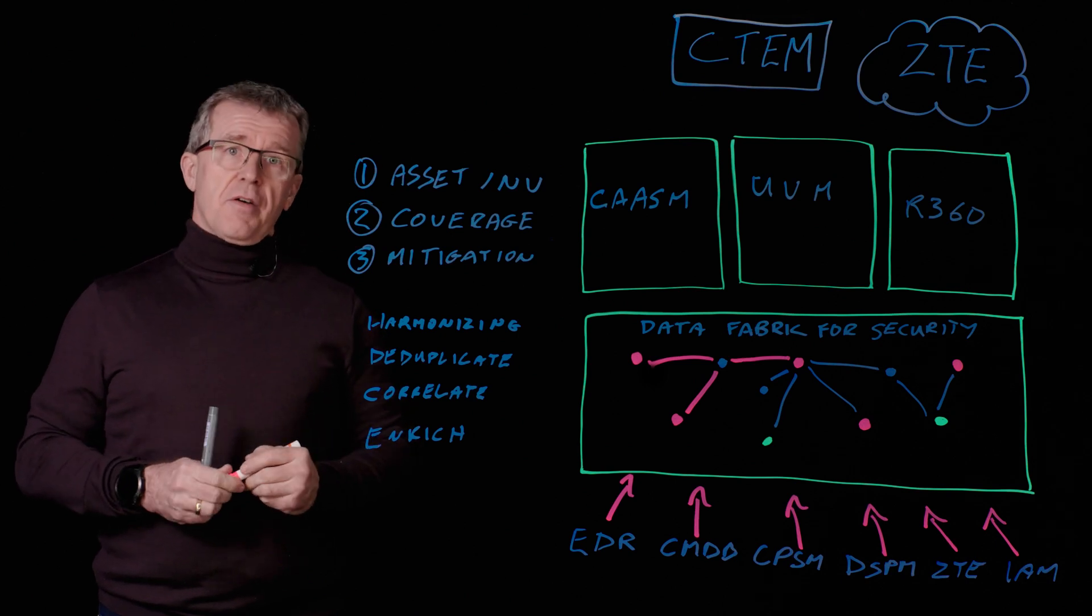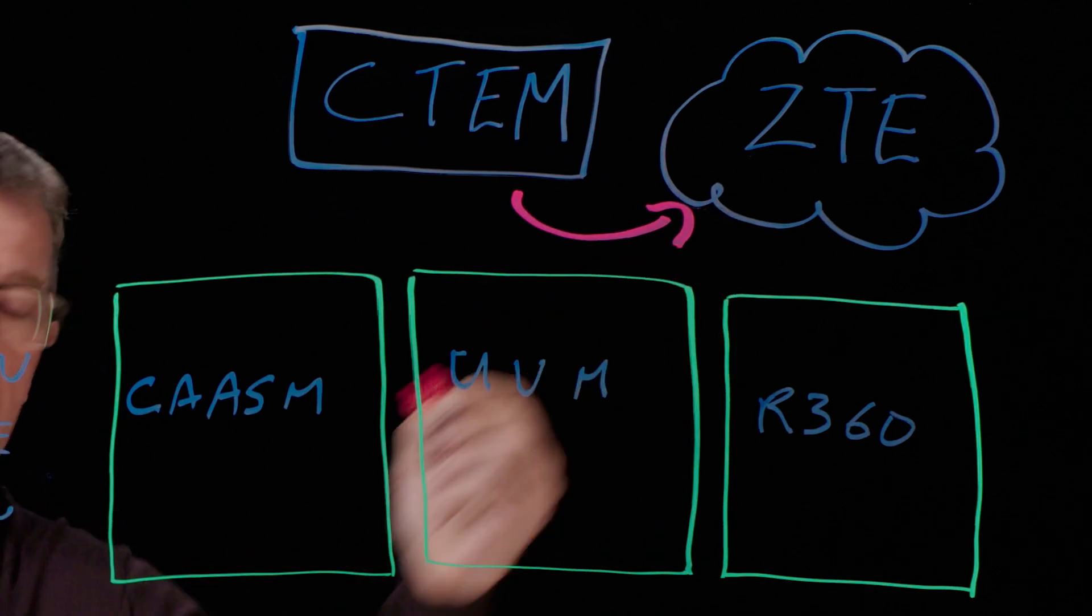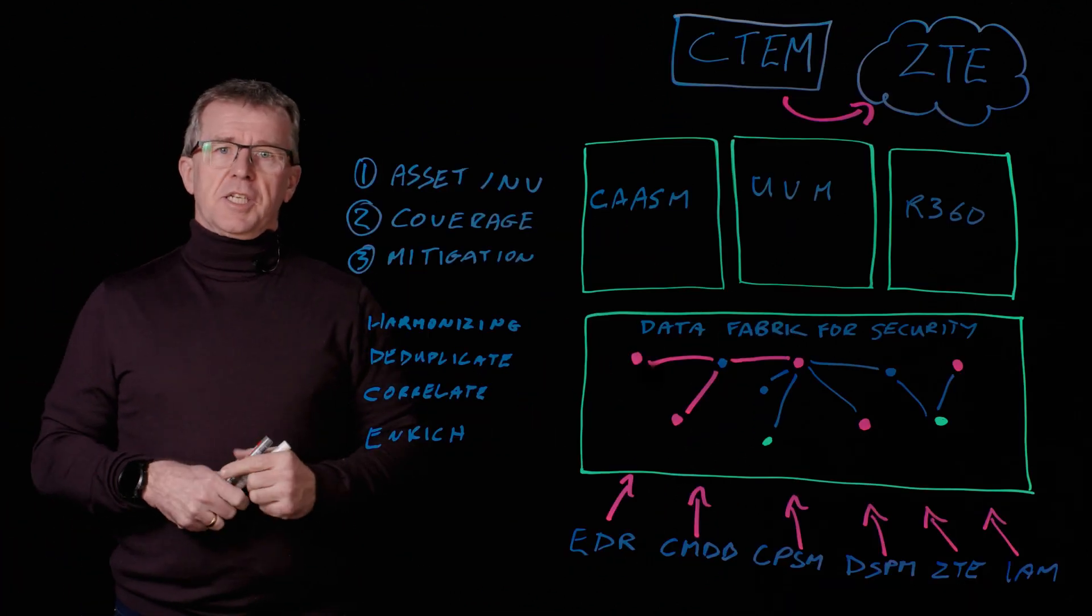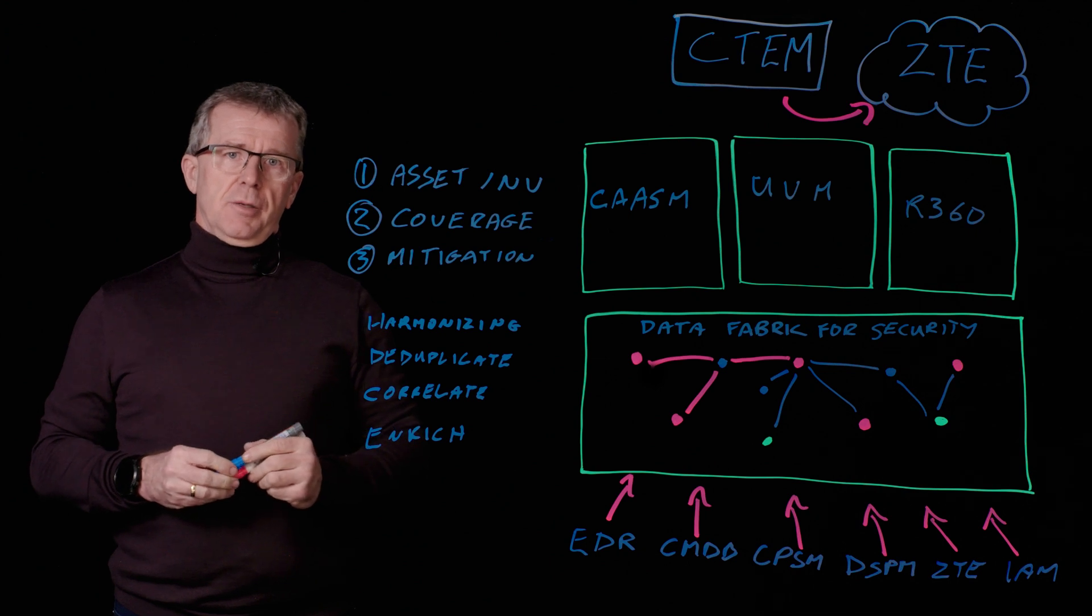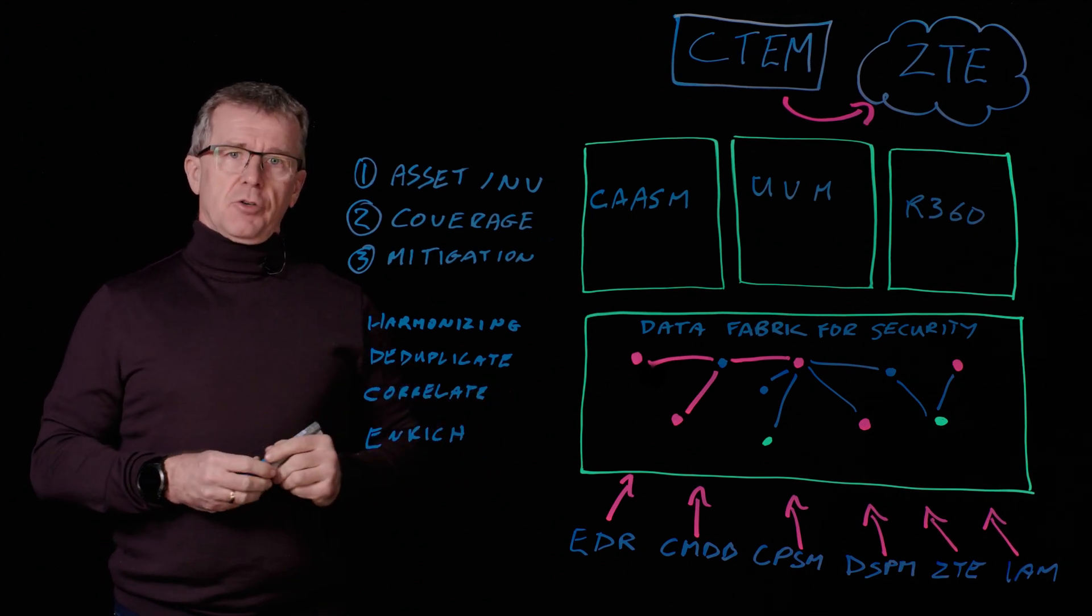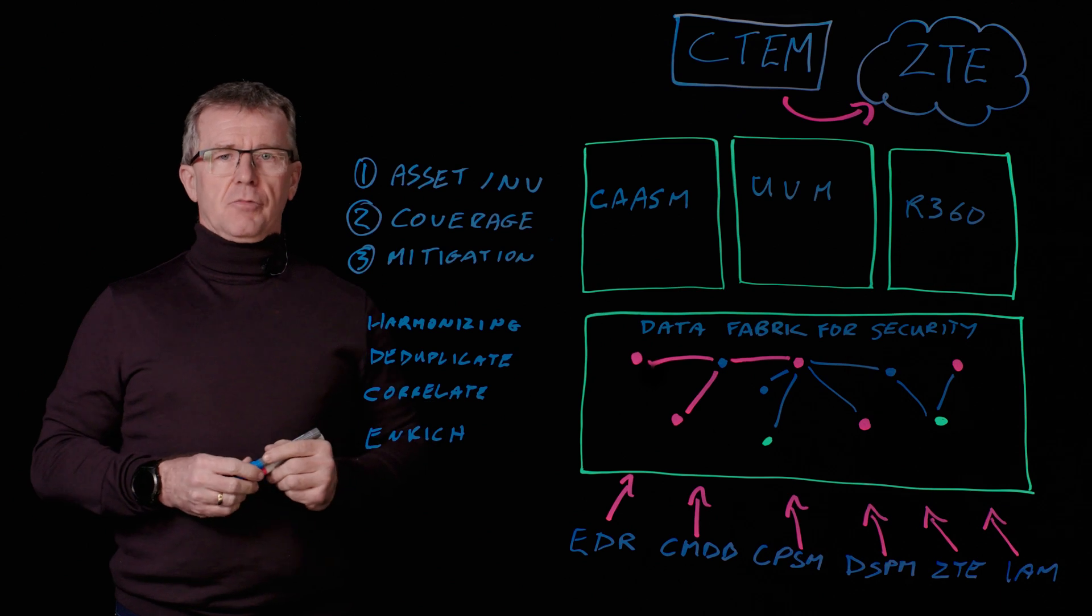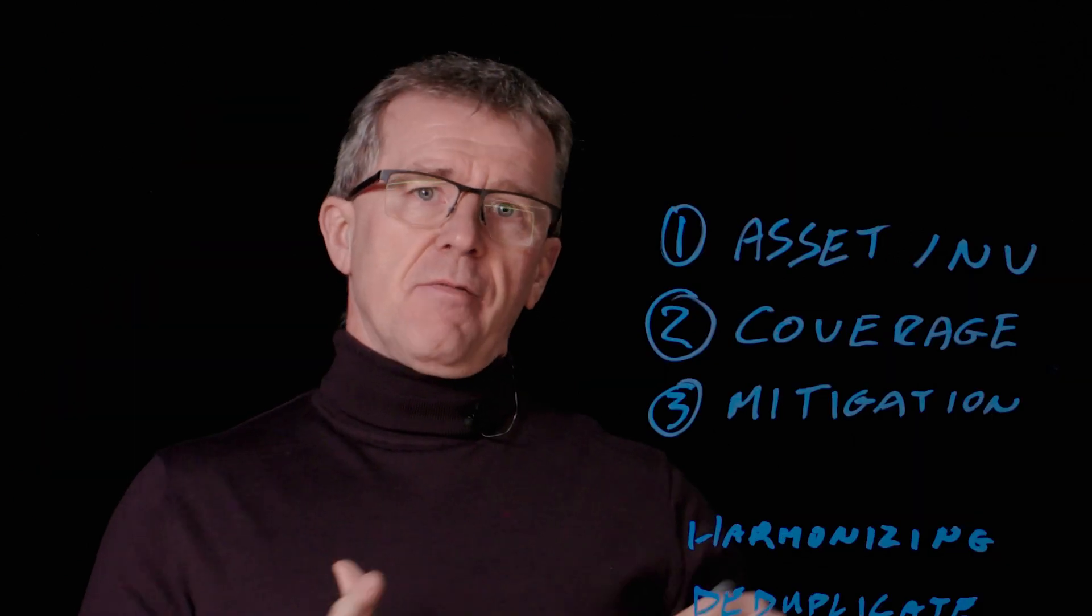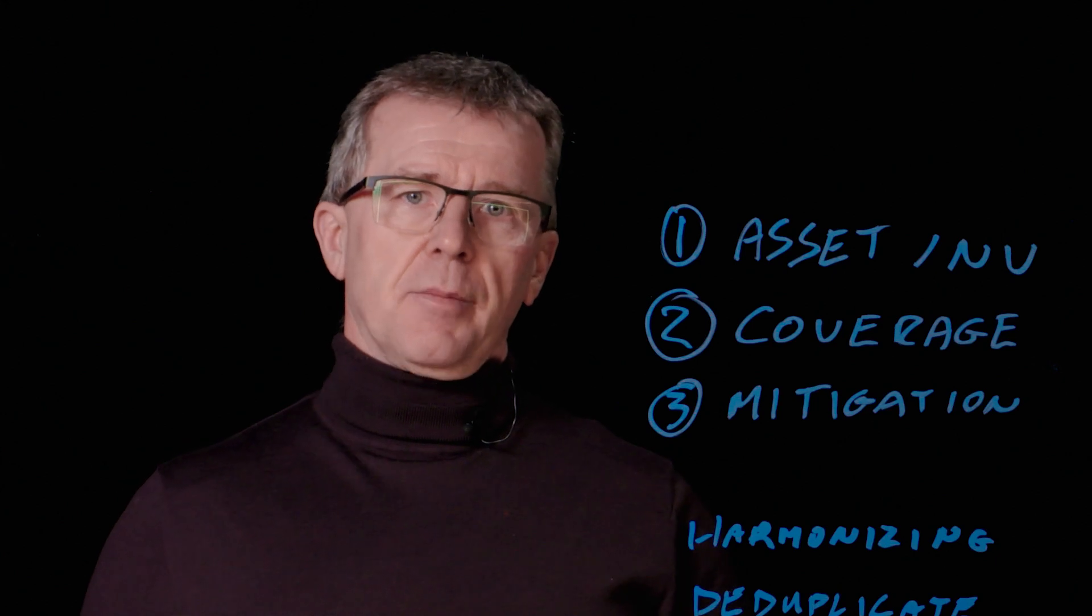And then lastly, we can employ some very powerful feedback loops. We might, for example, notice a risky asset within one of these solutions and we can inform the zero trust exchange that an asset poses a potential risk, and we can enforce a policy change to that asset, thus giving you time to investigate the problem.